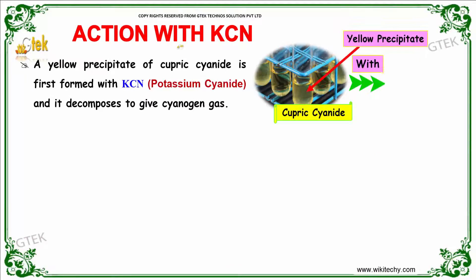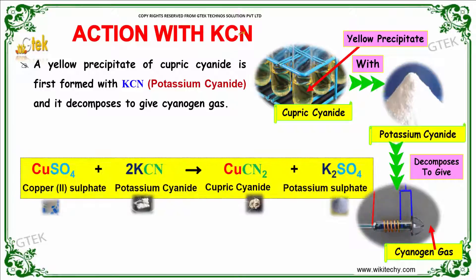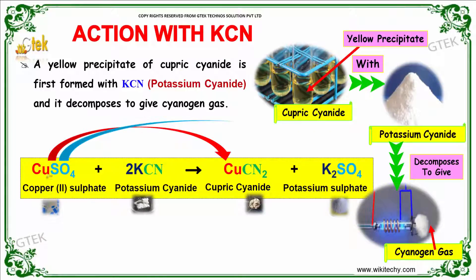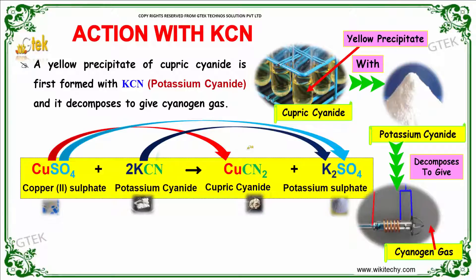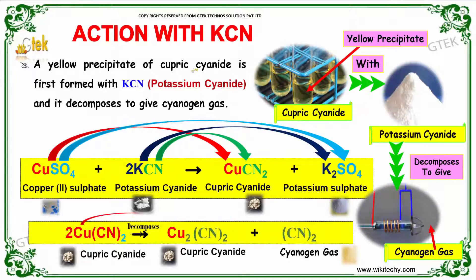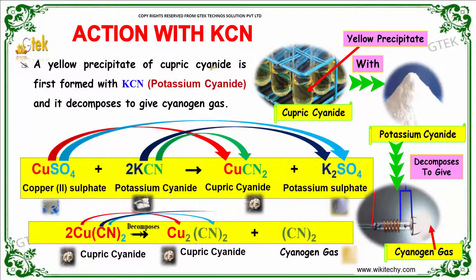Action of potassium cyanide: copper sulfate reacts with potassium cyanide to give a low precipitate of cupric cyanide. The cupric cyanide then decomposes to give cyanogen gas.